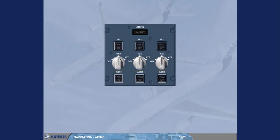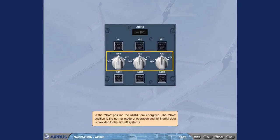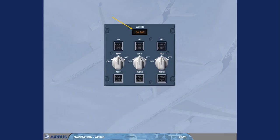In the NAV position, the ADIRs are energized. The NAV position is the normal mode of operation and full inertial data is provided to the aircraft systems. The on-bat light comes on to inform the crew that the ADIR system is being powered by aircraft batteries only. The light also comes on for a few seconds at the beginning of a full alignment as a test of the battery circuit.